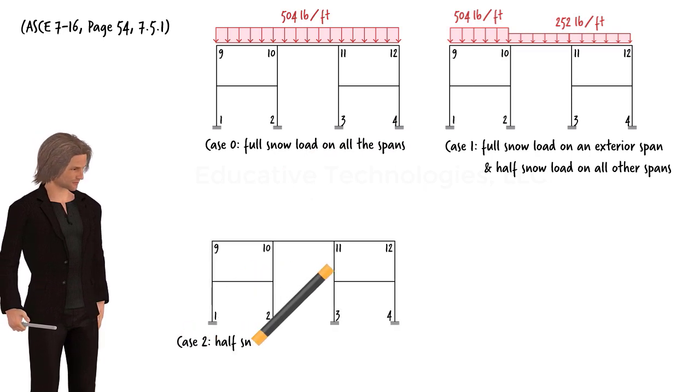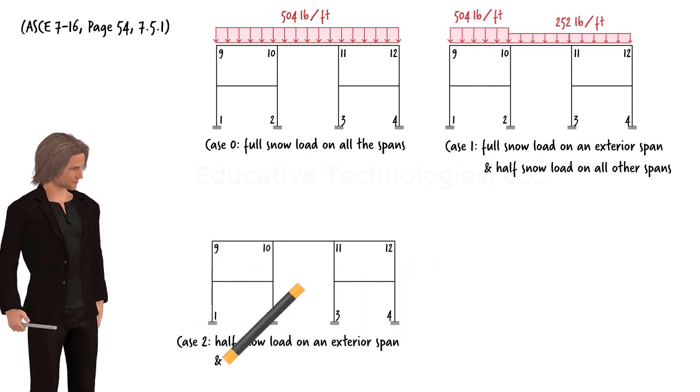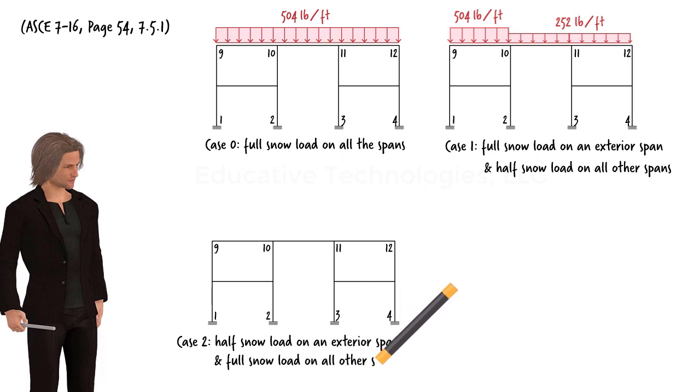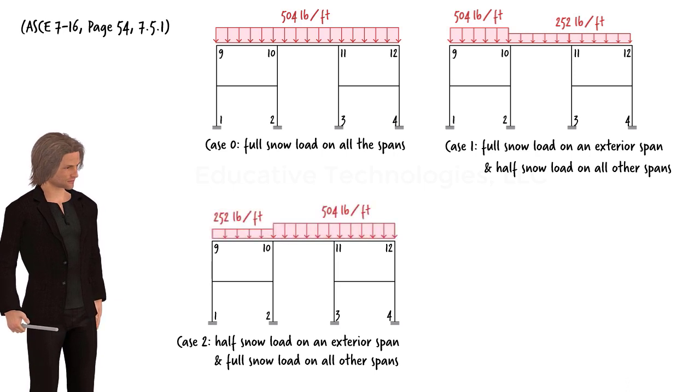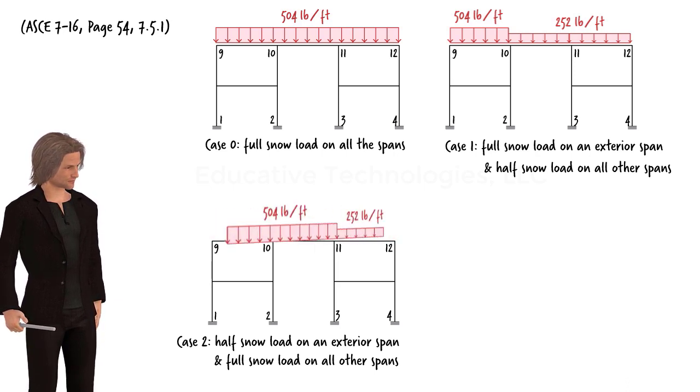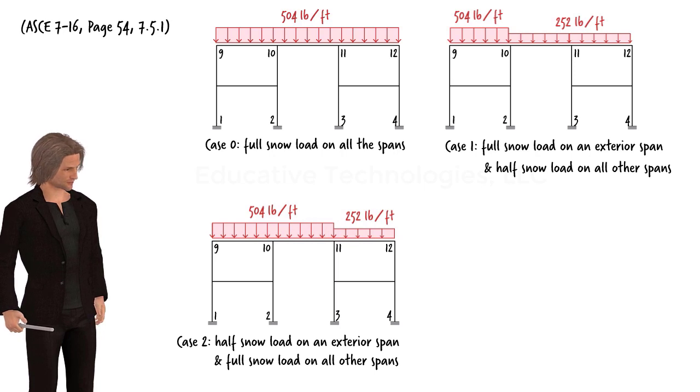Case 2. Half snow load is placed on an exterior span, while all other spans carry the full snow load. This case is similar to case 1, in that we can anticipate two loading scenarios. Yet we only need to perform the necessary computations for one of them.